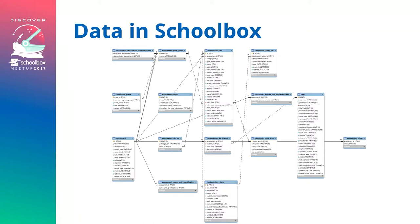You end up with something like this — the assessments area of Schoolbox. This shows you the links between multiple tables, where they interact, and what is common throughout the platform. These are very helpful, especially if you've never looked at our database before, to understand what the links are, where the data exists, and how it flows through the system. There is a lot of information available when you look in the database.